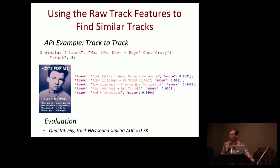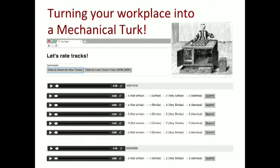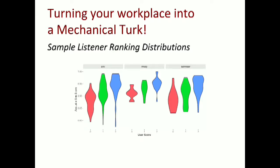Some of you might be wondering how we have an AUC when we didn't train a model with outcomes. We turned our workplace into a mechanical Turk and had coworkers give feedback. We take the top 200 nearest neighbors for a given query track, shuffle them, randomly choose five, and solicit feedback from people in our office — now we have outcomes. We know what sounds similar and what doesn't. Running this experiment yields distributions where the score from the acoustic model clearly tracks with higher or more similar user perceptions.